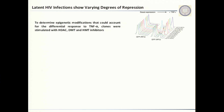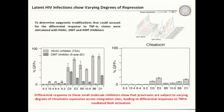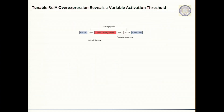We hypothesized that this differential activation was due to different epigenetic modifications at different integration sites. All these clones had unique integration sites. To see if there were differences in epigenetic modifications, we stimulated them with different small molecule inhibitors such as HDAC, DNMT, or HMT inhibitors. We again found differential activation across all these clones, suggesting that different integration sites give rise to different degrees of chromatin repression, which possibly explains the differential activation to TNF-alpha.